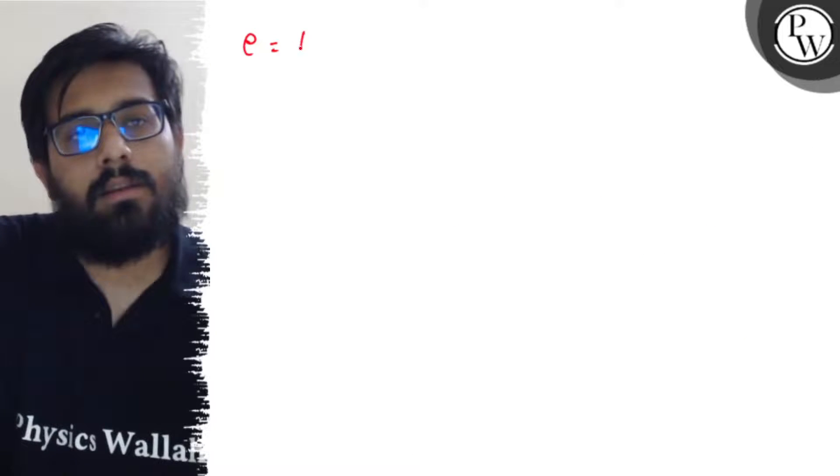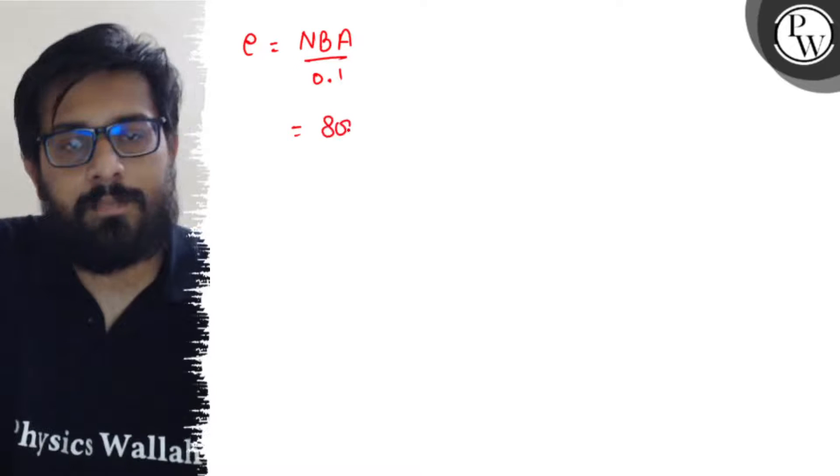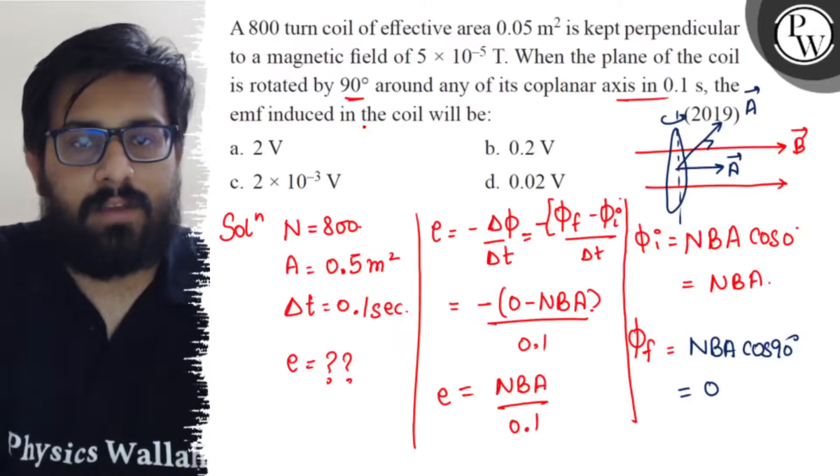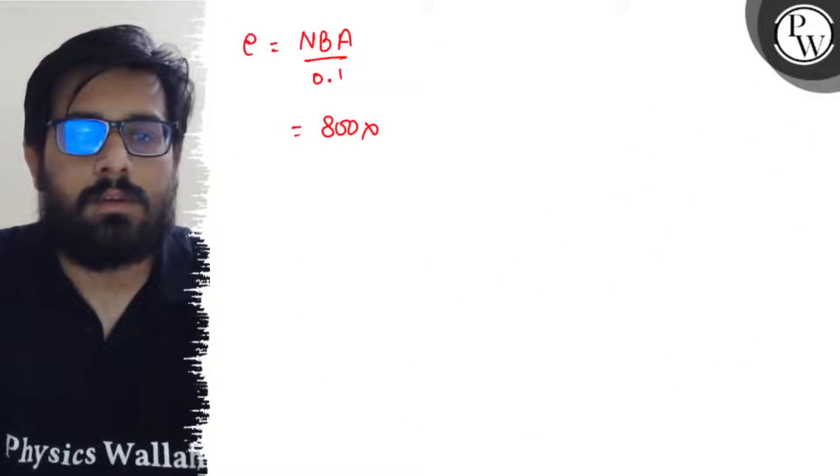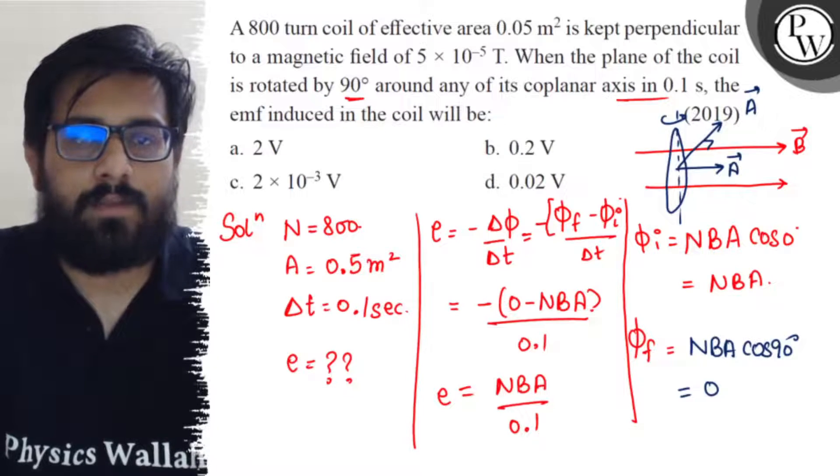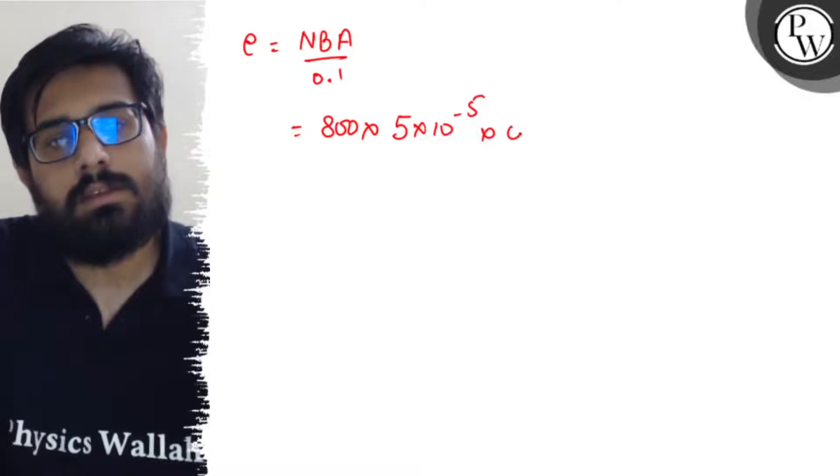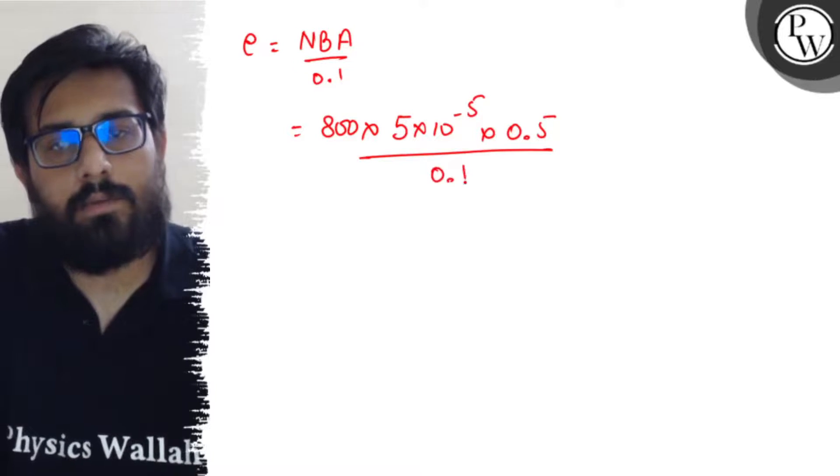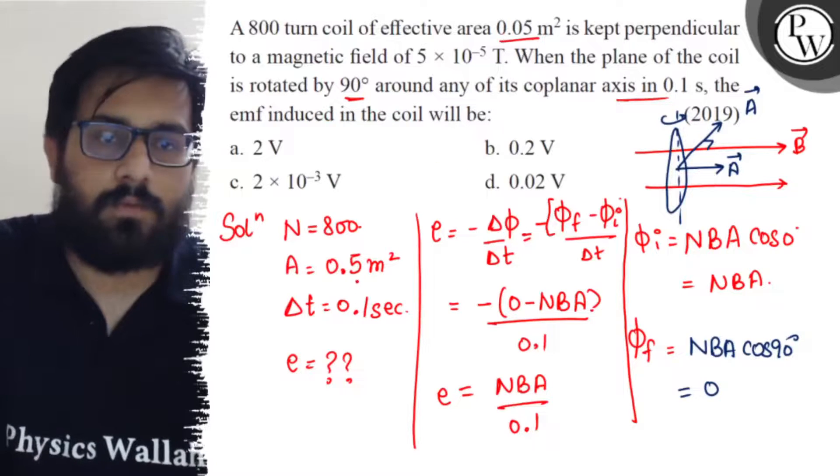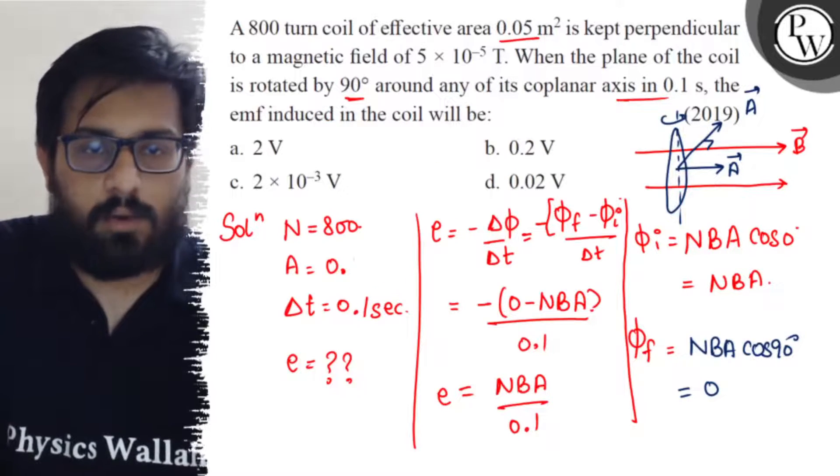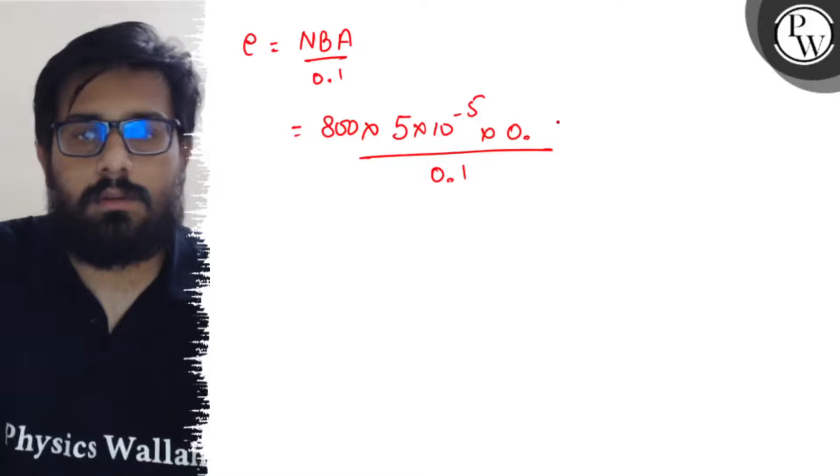Let's solve this. e comes out to be NBA by 0.1. Number of turns is 800, the value of the magnetic field is 5 × 10⁻⁵ Tesla, and the value of area is 0.05. So just putting the values: 800 × 5 × 10⁻⁵ × 0.05 divided by 0.1.